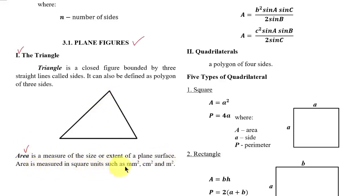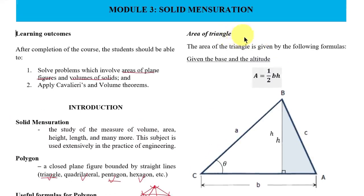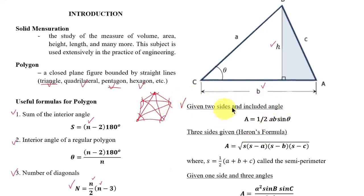Area is a measure of the size or extent of a plane surface, measured in square units such as square millimeters, square centimeters, and square meters. The first formula to solve the area of a triangle, given the base and altitude, is: Area = ½ × base × height. This is illustrated by an oblique triangle with base b and height h. The second formula, given two sides and the included angle, is: Area = ½ × a × b × sin(θ).